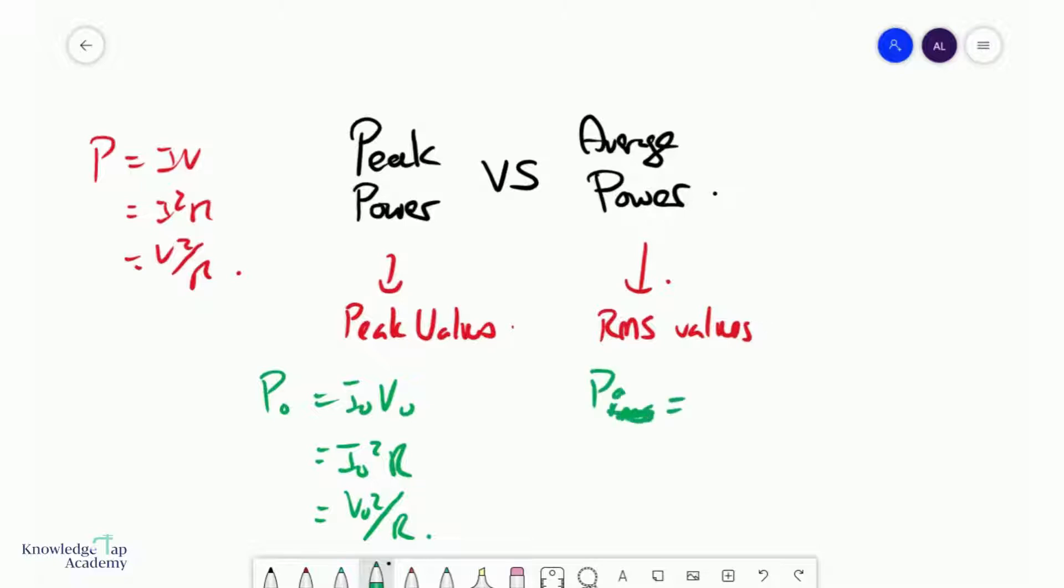P average would be VRMS times IRMS, or IRMS squared R, or VRMS squared over R.